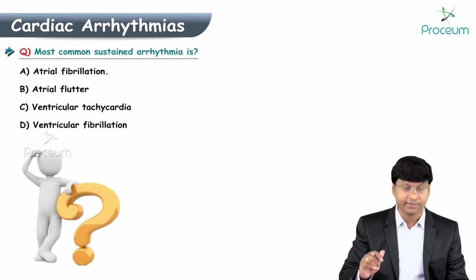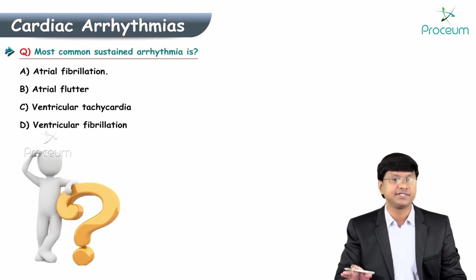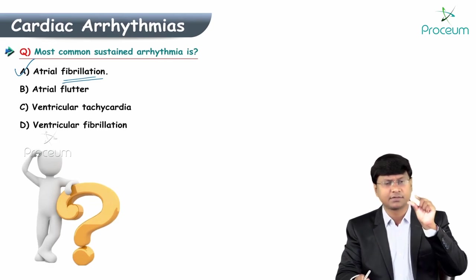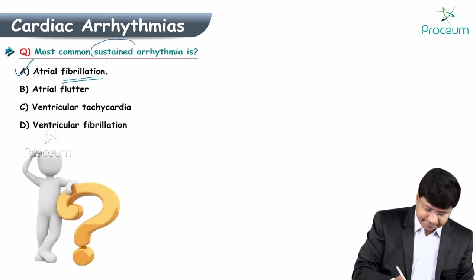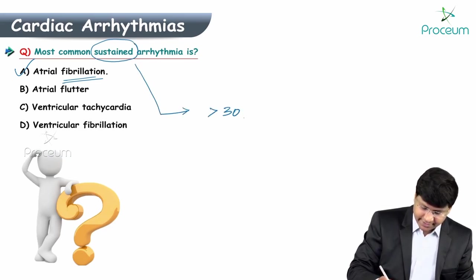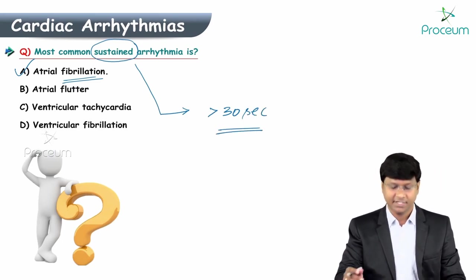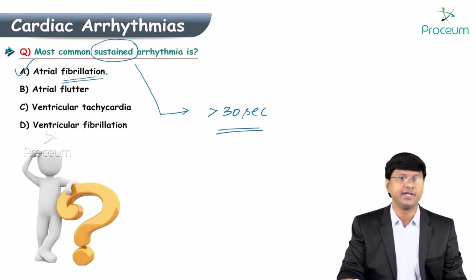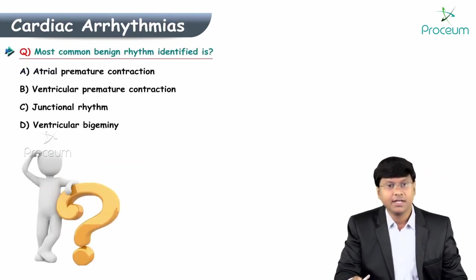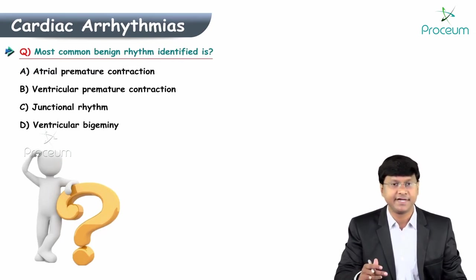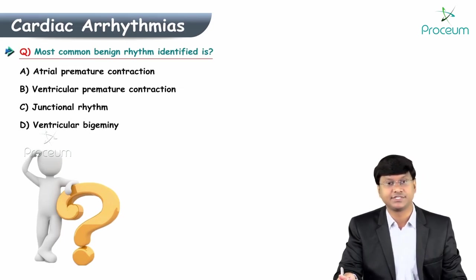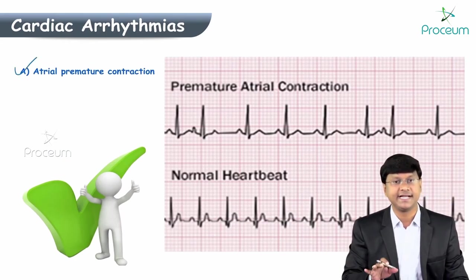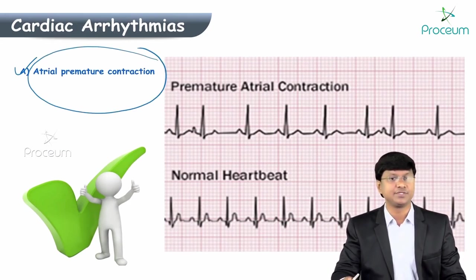What is the most common sustained arrhythmia? The answer is atrial fibrillation. 'Sustained' means the arrhythmia lasts for more than 30 seconds. What is the most common benign rhythm identified? The answer is atrial premature contraction.